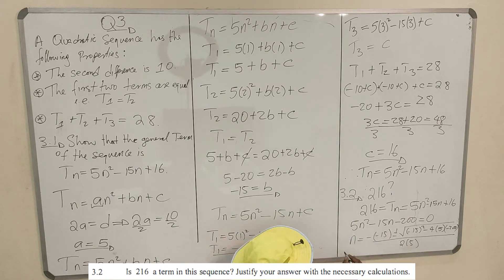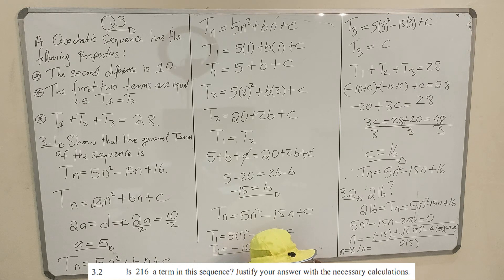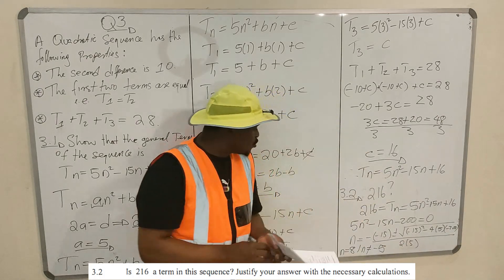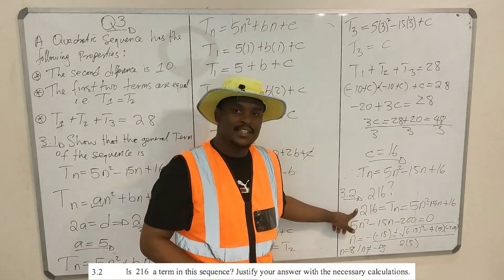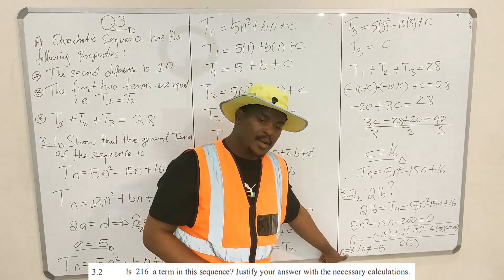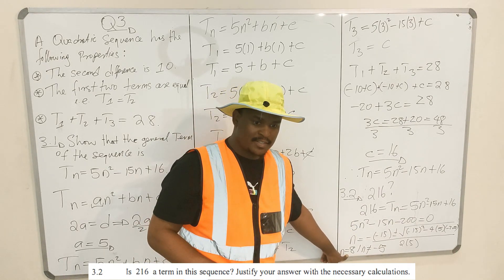The values of n work out to 8 and minus 5. Which one is correct? 8, because it is a positive integer. So 216 is in the sequence and it is the 8th term of the sequence. You're done with this question.